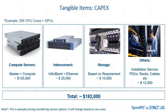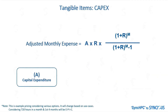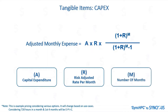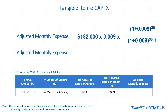Consider an example with a 256 CPU plus GPU system with all required elements including their installation. Adjusted monthly expense with an adjusted risk rate is a part of calculating TCO. With the help of this equation, we can calculate the adjusted monthly expense of the system. The risk-adjusted rate depends on the possibility of risks of an investment in projects. Let's put the required values in the equation by considering a risk-adjusted rate of 10% per annum, and we will get the adjusted monthly expense.